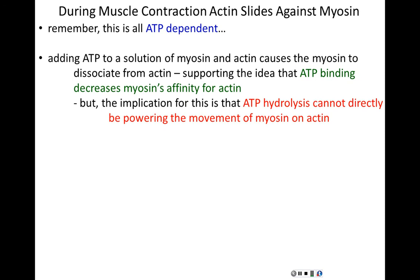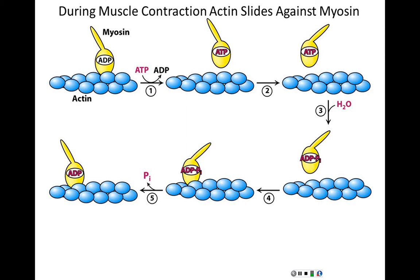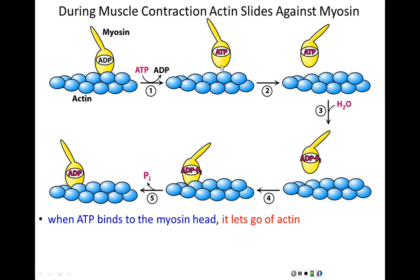That implies that ATP hydrolysis alone can't directly be powering the movement of myosin on actin. Certainly myosin binding and pulling on actin requires energy, but when we add ATP, myosin lets go of actin rather than binding and pulling it. What's going on is an indirect movement that allows the bind-pull-release mechanism. When ATP binds to a myosin head, the myosin head lets go of actin, and in addition, when ATP binds to myosin, that lever arm straightens back to its original conformation — releasing actin while moving the lever arm.